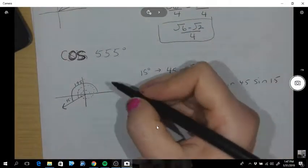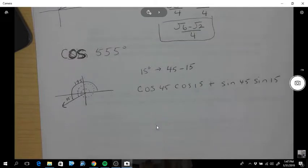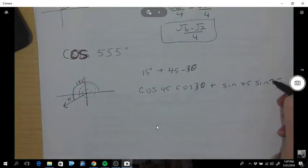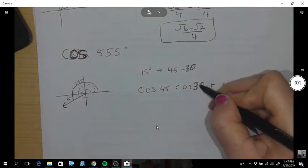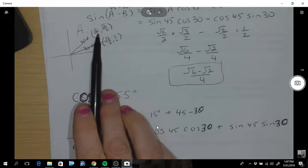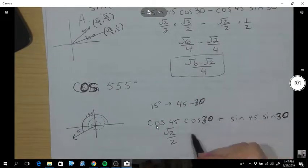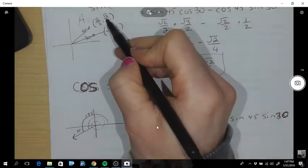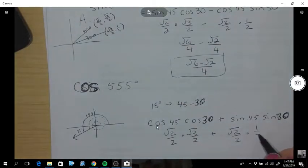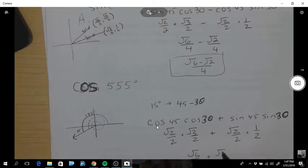So in finding cos 555, we're going to have to use this. Whoops, sorry, this should be 30. Jumping ahead. Cos 45, I already have them up here. Cos 45 is root 2 over 2. Cos of 30 is root 3 over 2. Plus sine 45, that's root 2 over 2. And sine of 30 is 1 half. So now I get root 6 over 4 plus root 2 over 4.